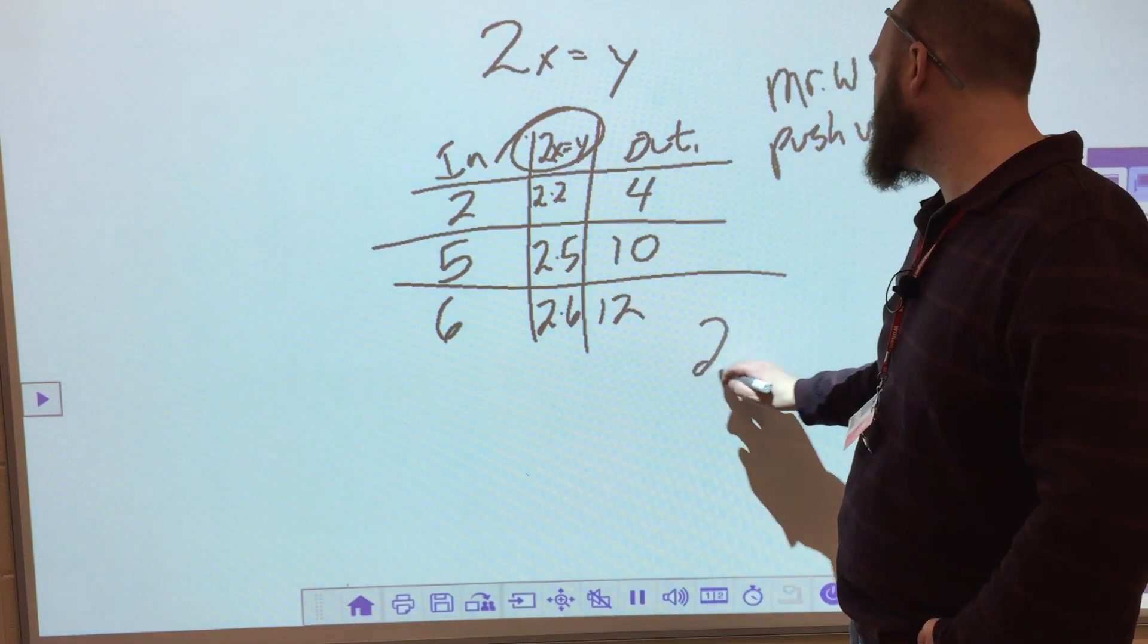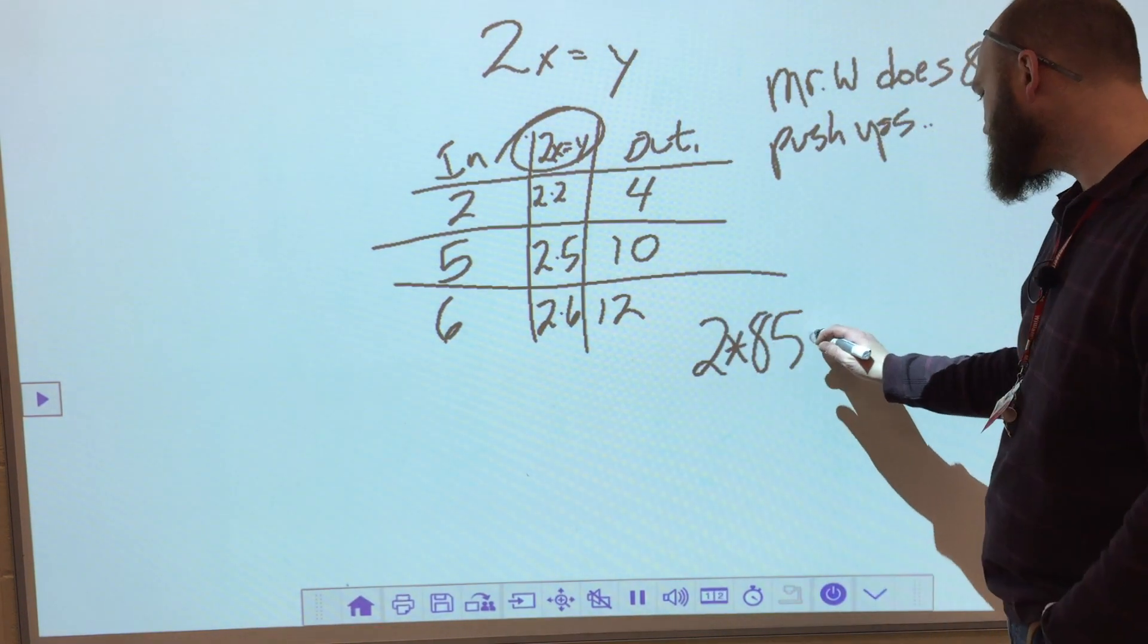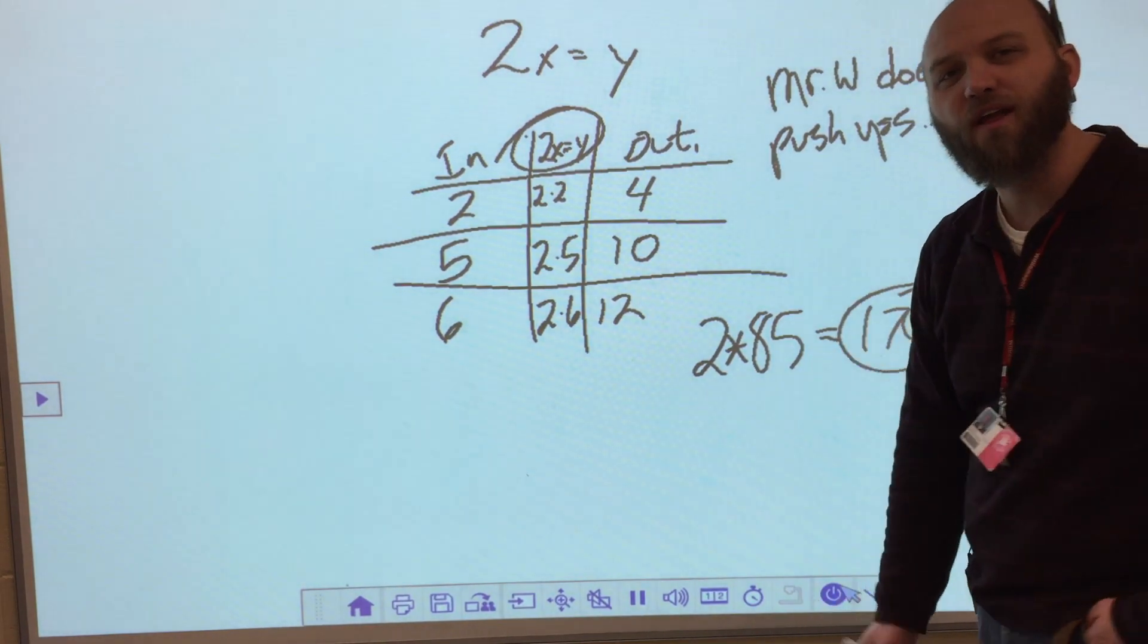I have my expression 2 times 85, and I'll keep it standard with the asterisk there, equals 170. Now I know that Mr. Fosnot is going to have to do 170 push-ups. So let's go to your book and check that out.